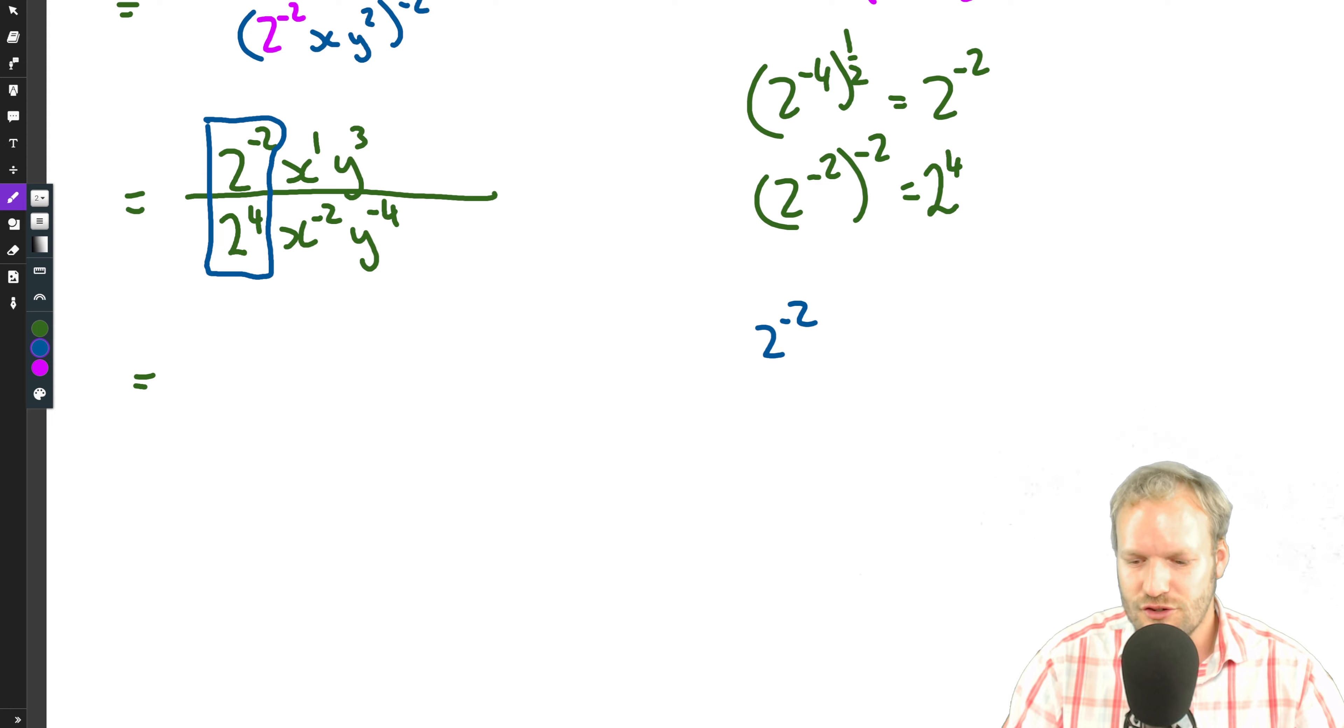So two to the negative two divided by two to the four—well, we just use our exponent laws. The base stays the same and we subtract exponents, so we've got negative two minus four, negative six. So two to the negative six.